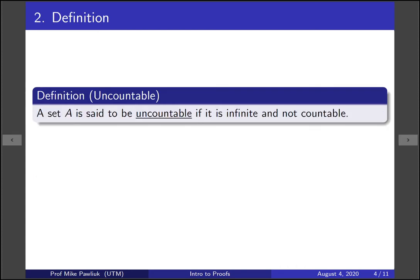We'll start with the definition of an uncountable set. A set A is said to be uncountable if it's infinite and not countable. Now, this definition tends to be somewhat confusing for people. And let me give some heuristics or some intuition for what this definition is about.